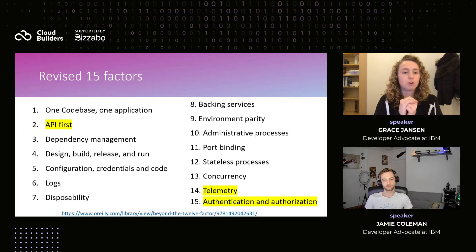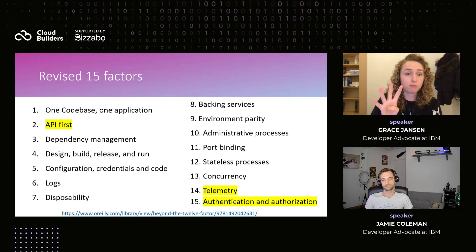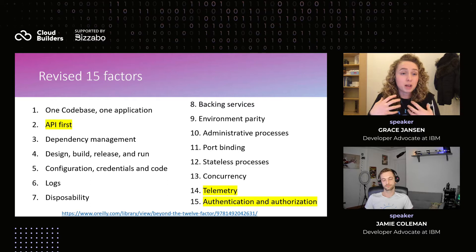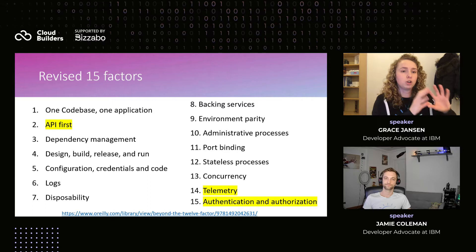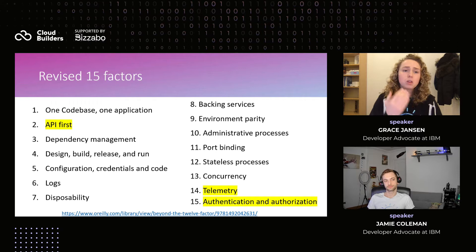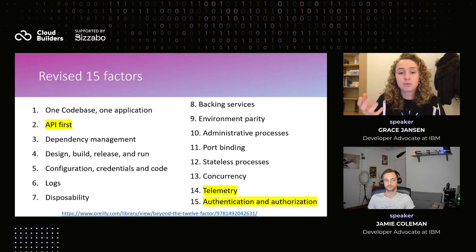The factors highlighted in yellow are the ones that have actually changed: API first, telemetry, and authentication and authorization. Many others are very similar to the original 12 factors with slight tweaks. For example, in number four, instead of 'build, release, run' from the original, it's now 'design, build, release, run' — pulling in that design aspect because we now know we're developing in an agile manner. Instead of one huge design followed in a waterfall fashion, we incorporate design into every single stage of application development.